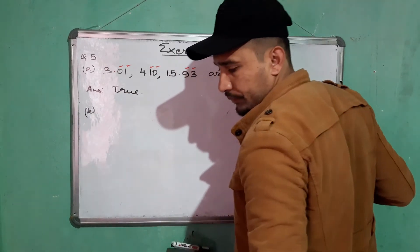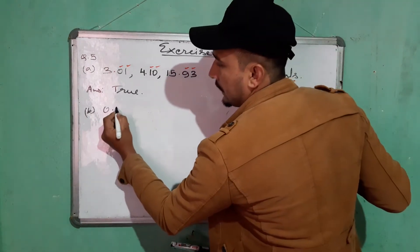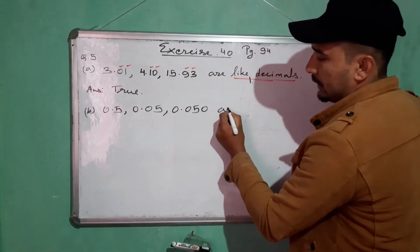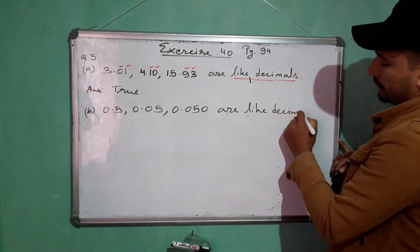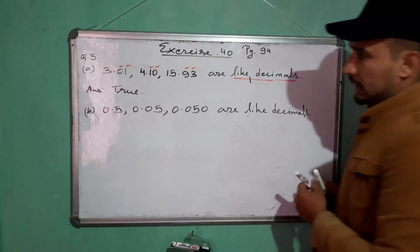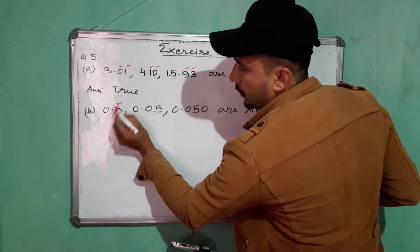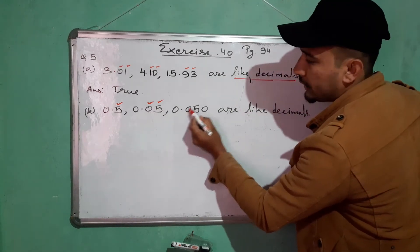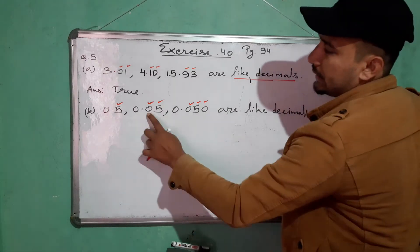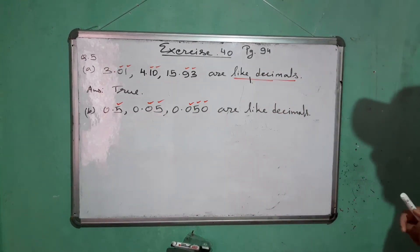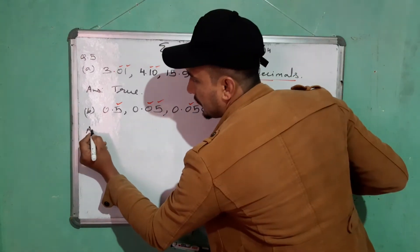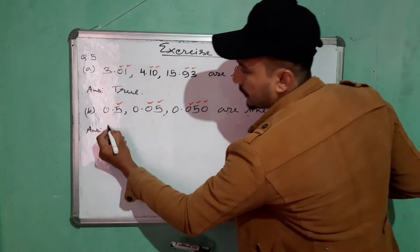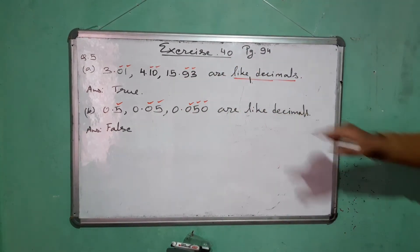Number (b): 0.5, 0.05, and 0.050 — are these like decimals? After the decimal in 0.5 you have one digit; in 0.05 you have two digits; in 0.050 you have three digits. That means one digit, two digits, three digits — unequal number of digits after the decimal. Hence these are not like decimals. This statement is False.